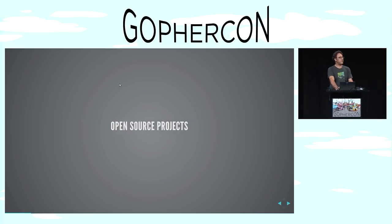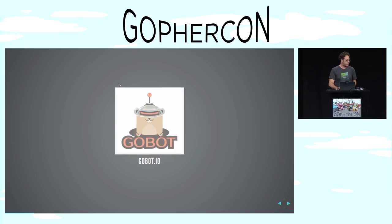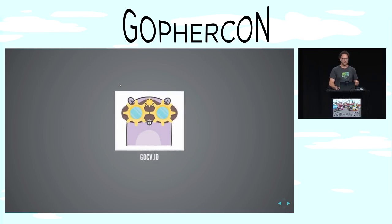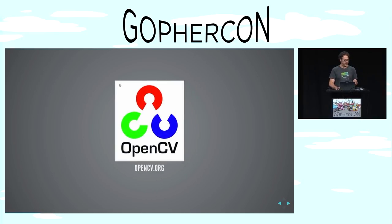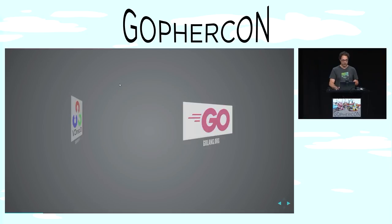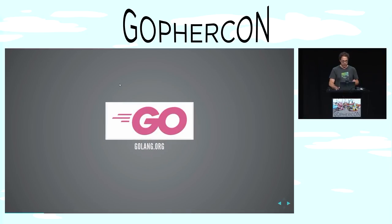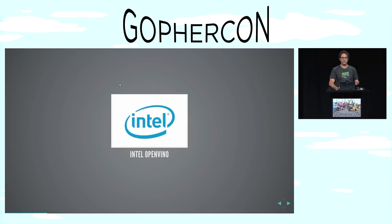Let's move on to some of our open source projects, the best known of which is GoBot, which we introduced to the Go community five years ago at the first GopherCon. And the most recent introduction is GoCV. GoCV is an open source project that lets you use OpenCV from the Go programming language. It also lets you use OpenVINO from Intel, which is a special, customized, hardware-accelerated version of OpenCV.